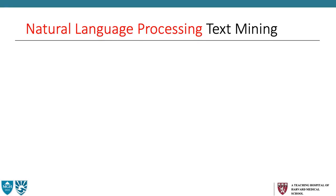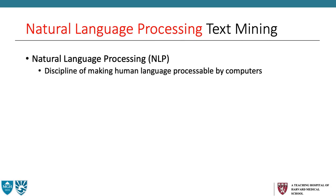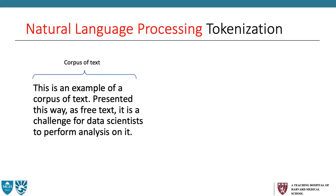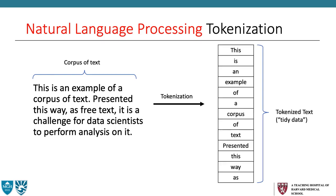Thank you for that introduction, Sophia. What we want to do now is provide an overview of some of the natural language processing techniques that the Genetix package utilizes. NLP is simply a discipline of making human language understandable by computers — ultimately, we want to convert unstructured data into structured data. We use a variety of techniques in the package; we'll highlight tokenization and regular expressions. This is an example of a corpus of text presented as free text — it is a challenge for data scientists to perform analysis on it. One way to simplify it is to tokenize the text, take each individual word, and place them into a specific cell in a data frame. This is an example of tokenized text as tidy data.